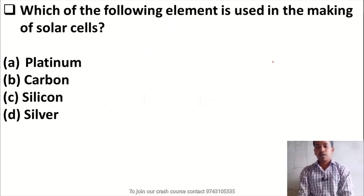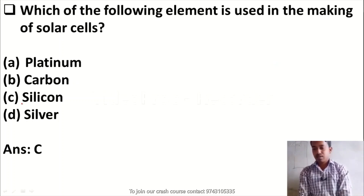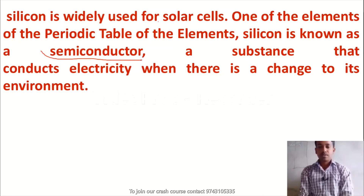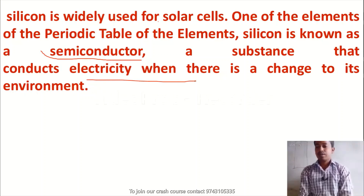Which of the following element is used in the making of solar cells? Option A, platinum; Option B, carbon; Option C, silicon; Option D, silver. The right answer is Option C — silicon is the correct answer. Silicon is widely used for solar cells. It is one of the elements of the periodic table and is also known as a semiconductor — a substance that conducts electricity when there is a change to its environment.